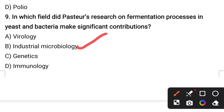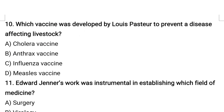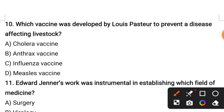Industrial microbiology is the correct answer for the previous question. Which vaccine was developed by Louis Pasteur to prevent a disease affecting livestock? Options are cholera vaccine, anthrax vaccine, influenza vaccine, measles vaccine. The correct answer is the anthrax vaccine.